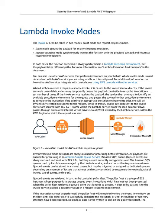While in transit, invoke payloads sent to the invoke service are secured with TLS 1.2+. Traffic within the Lambda service, from the load balancer down, passes through an isolated internal VPC owned by the Lambda service, within the AWS region to which the request was sent. Event invocation mode payloads are always queued for processing before invocation. All payloads are queued in an Amazon SQS queue. Queued events are always secured in transit with TLS 1.2+, but they are not currently encrypted at rest. The Amazon SQS queues used by Lambda are managed by the Lambda service and are not visible to customers.